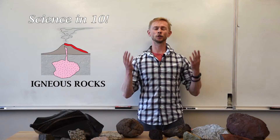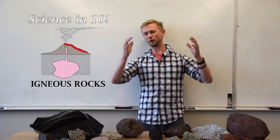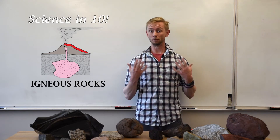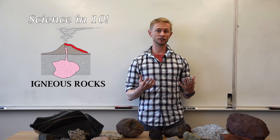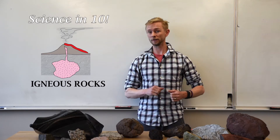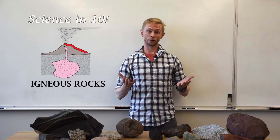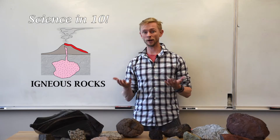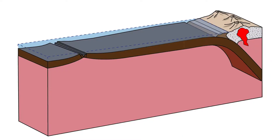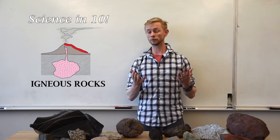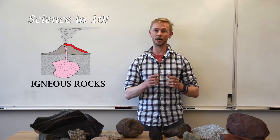As you might guess, it takes an incredible amount of heat to keep rocks molten — much more heat than is generally present at the Earth's surface or within the Earth's crust. So when a body of melt works its way into the crust, either above a subduction zone, at a mid-ocean ridge, or at hot spots, it begins to lose heat and crystallize.